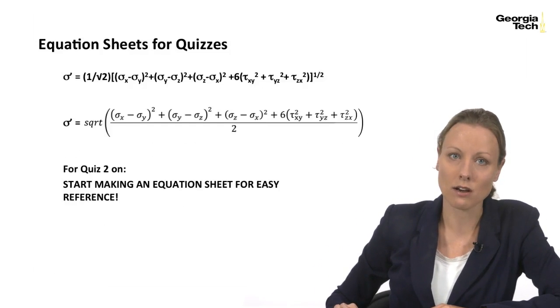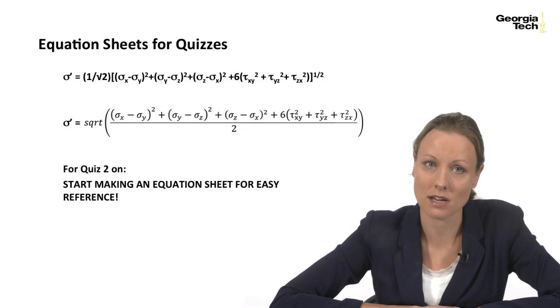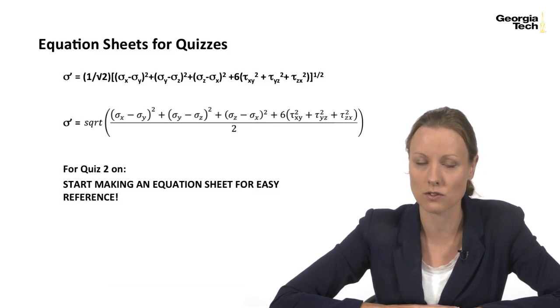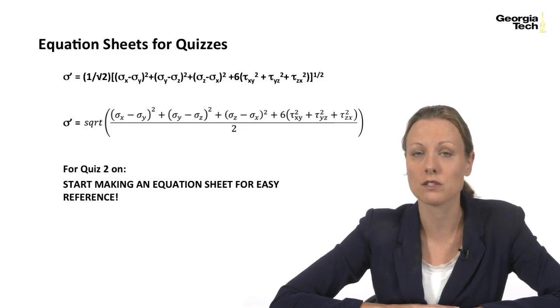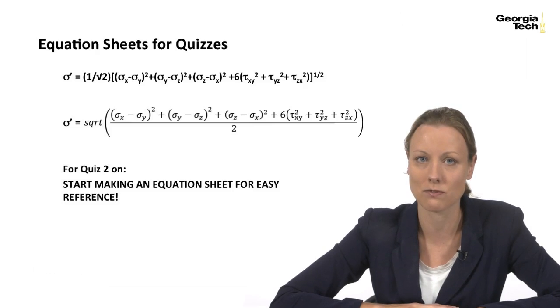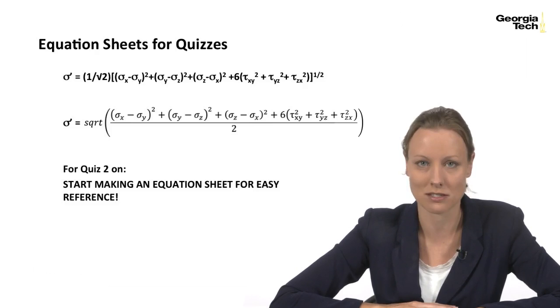Last time we left off—one quick thing. It's a good idea for quiz two to start making an equation sheet for easy reference. We've had a lot of equations so far in this course, and quiz two will be a lot easier if you have a sheet with all of your equations just there easy to reference for you. Definitely make sure to put the von Mises equations on that sheet.